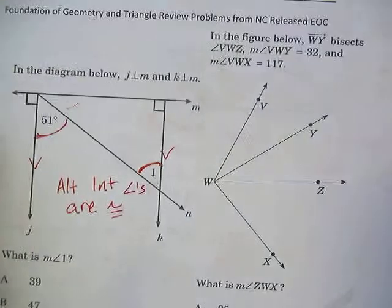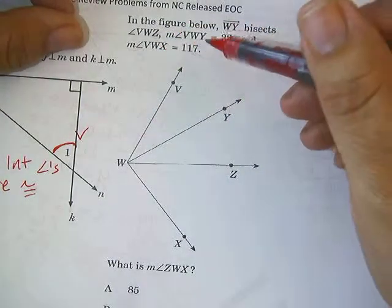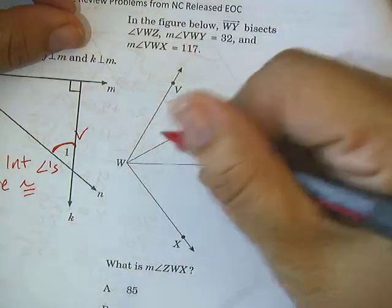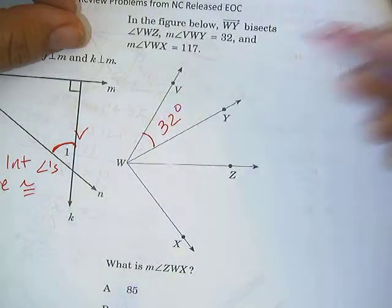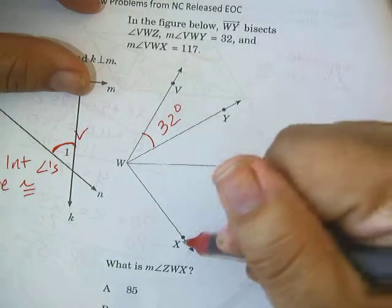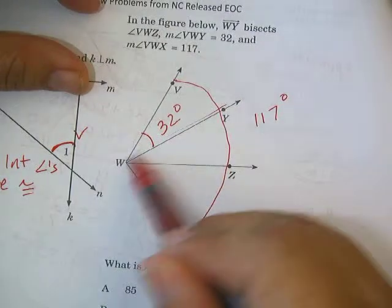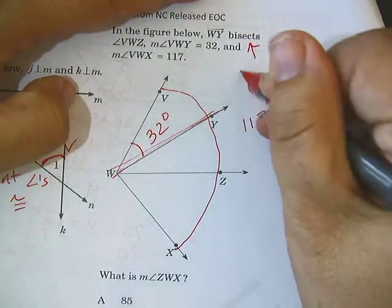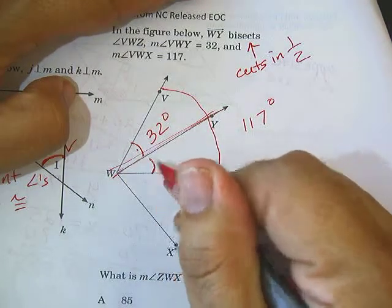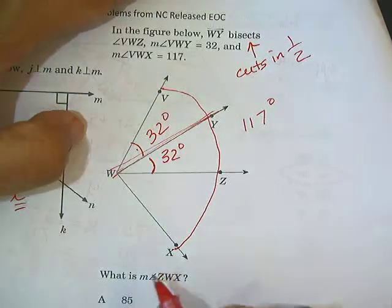Moving up to the next one. In the figure below, WY bisects VWZ, and the measure of angle VWY is 32 degrees. So I'm going to put 32 degrees right here. And they tell me the whole thing, VWX, all the way around is 117 degrees. And they tell me that WY bisects. B-I-S-E-C-T means cuts in half. So if that's 32 degrees, that's half. The other half is on this side, 32 degrees.